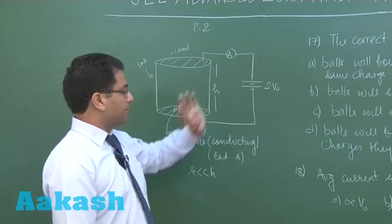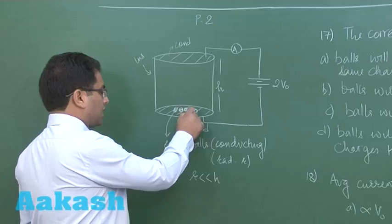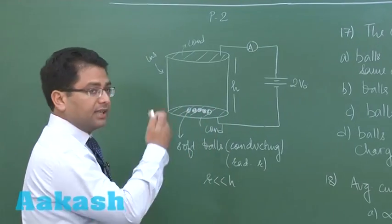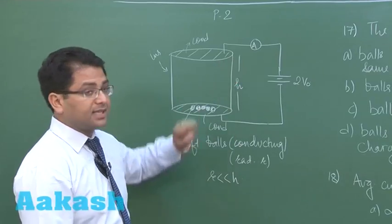There are soft balls which are coated with conducting material and they have radius r, and that value is much much less than h.